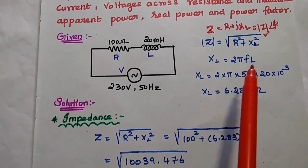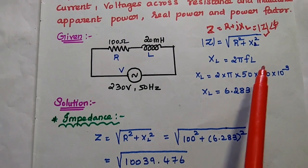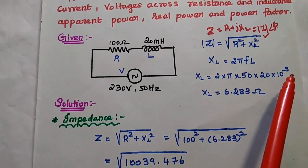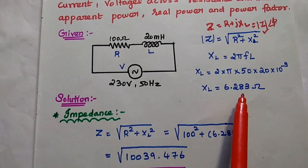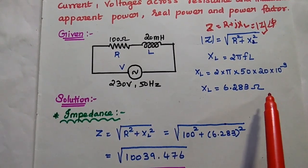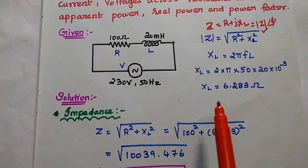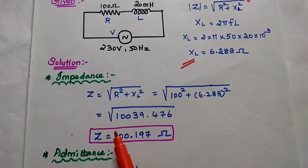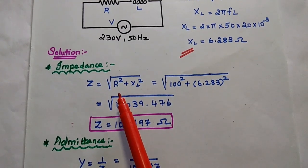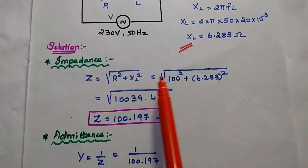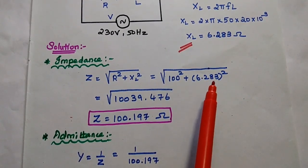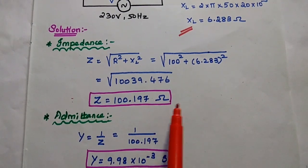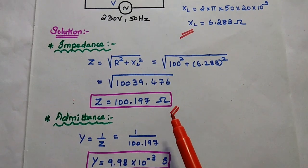We can substitute all those values: XL is equal to 2 into π into 50 multiplied with 20 into 10 to the power minus 3. Millihenry means we use 10 to the power minus 3. We can get the answer as 6.283 ohm. Now we have obtained the value of XL. Next, the impedance Z is equal to square root of R squared plus XL squared — substituting R as 100 and XL as 6.283 — we get the answer as 100.197 ohm. This is the magnitude of the impedance.